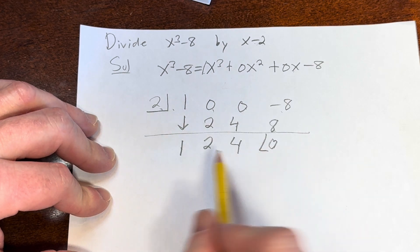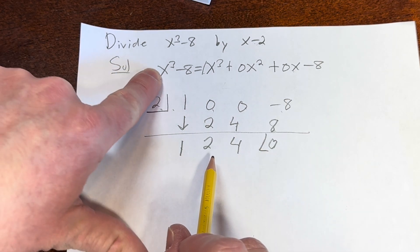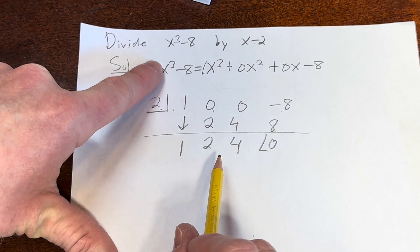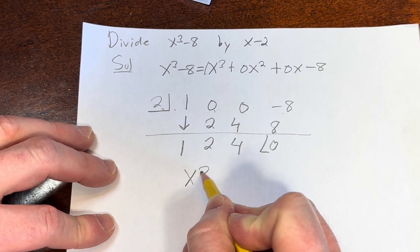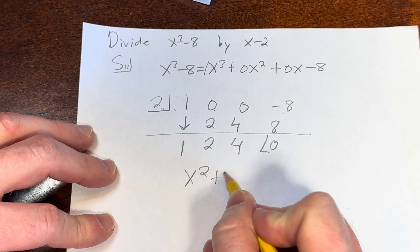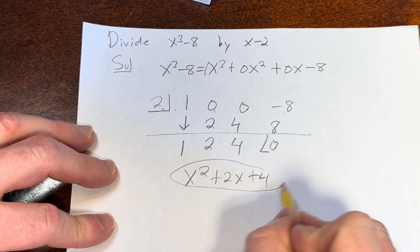And so at this point we can write down the quotient. It's one degree less than what you see here. So this is a 3, so we want to start at 2. So it'll be 1 times x squared or simply x squared plus 2x plus 4. And that would be the quotient.